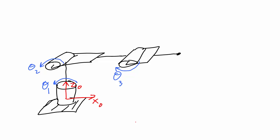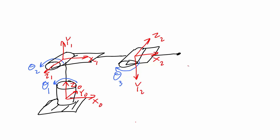X and Y just have to follow the right-hand rule. Z1 should be coming out of the page in order to make the positive direction of rotation consistent with what we drew. Z2 needs to be going into the page so that theta three is positive in the direction we've drawn. That leaves Y2 pointing down. The end effector frame I get just by copying the frame before.